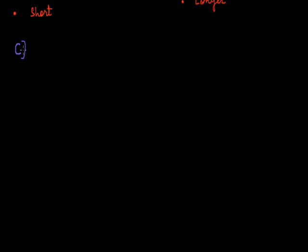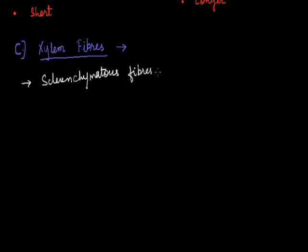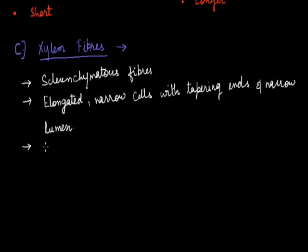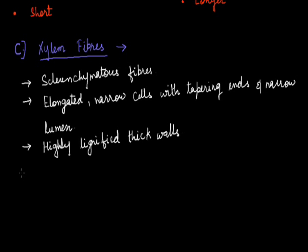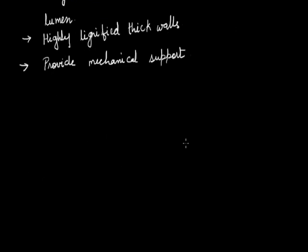The third type of xylem element is xylem fibers. Like tracheids and vessel elements, xylem fibers are also dead cells. These are sclerenchymatous fibers. The cells are elongated and narrow with tapering ends, and the lumen is also very narrow. The walls are very thick and highly lignified. Their basic function is to provide mechanical strength to the plant.